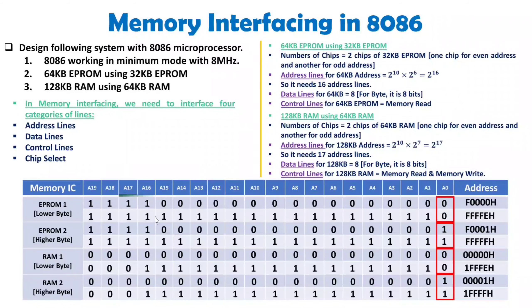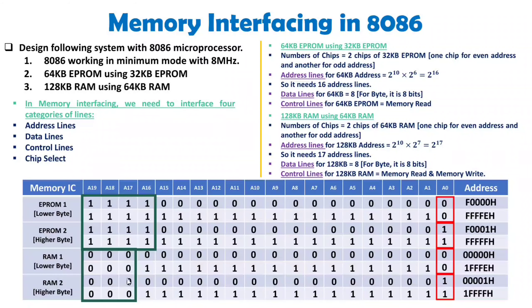For chip select, we look at the unused address lines. For EPROM, lines A16, A17, A18, and A19 are unused and all equal 1, so we feed them directly into a NAND gate to generate active-low chip select. For RAM, lines A17, A18, and A19 are unused and all equal 0, so after inversion (bubble), we feed them into a NAND gate. This is how chip select is provided in memory interfacing.